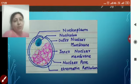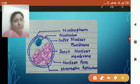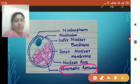Now after nuclear pore, inner nuclear membrane and outer nuclear membrane, let us discuss about the chromatin reticulum. Very important part of the cell, it is made up of DNA and histone proteins.